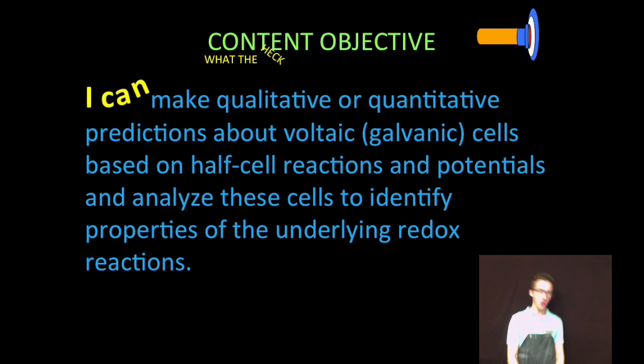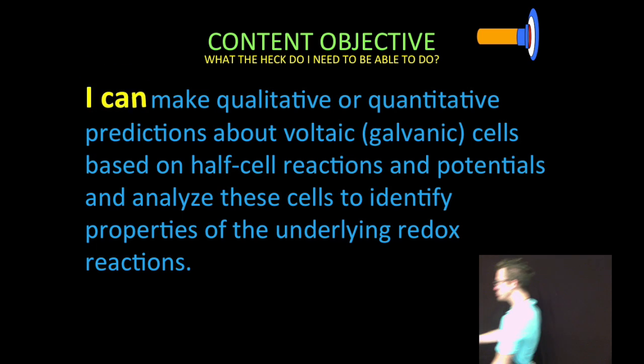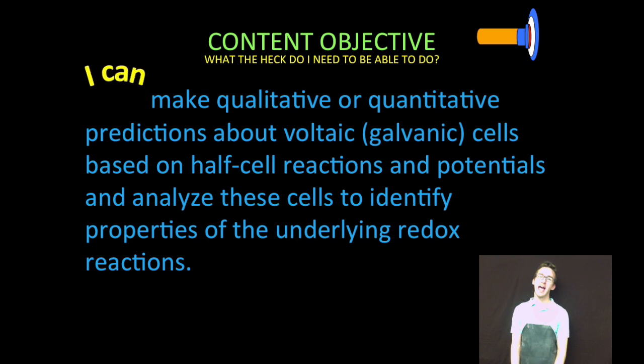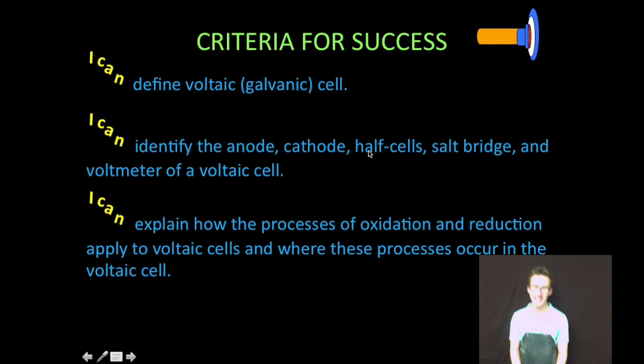Hey, what's up my chemistry people? Who is ready for some more electrochemistry? We are going to continue to make qualitative or quantitative predictions about voltaic or galvanic cells based on half cell reactions and potentials and analyze these cells to identify properties of the underlying redox reactions. All right, let's break it down.